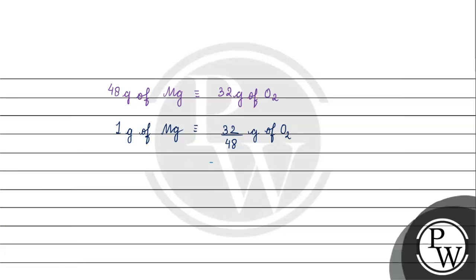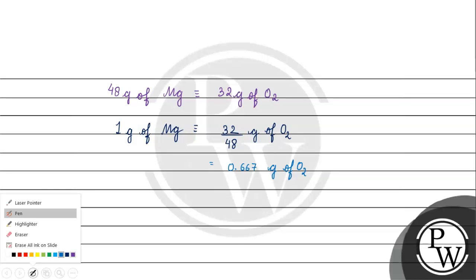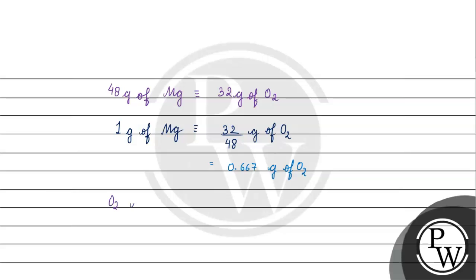For 48 grams of magnesium, we need 0.667 grams of oxygen per gram of magnesium, but the oxygen available is only 0.56 grams. This is why oxygen is the limiting reagent.